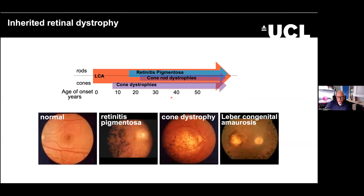The focus is going to be on inherited retinal dystrophies in the field of ophthalmology. We're mainly going to focus on LCA — Leber congenital amaurosis — which is a severe early-onset retinal dystrophy that affects both rod and cone function. I'm also going to touch on cone dystrophies and retinitis pigmentosa, viewed very much from the retina-in-the-dish point of view.